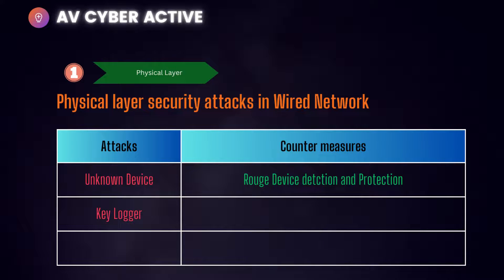The next type of attack is a keylogger. This happens when an unauthorized USB device is inserted into your computer and your computer trusts that device, while the attacker's motive is to capture all keylogged activity and extract sensitive information. The countermeasure is physical inspection — ensuring that USB headsets, keyboards, and mice do not have any intermediary device inserted between them that appears suspicious.